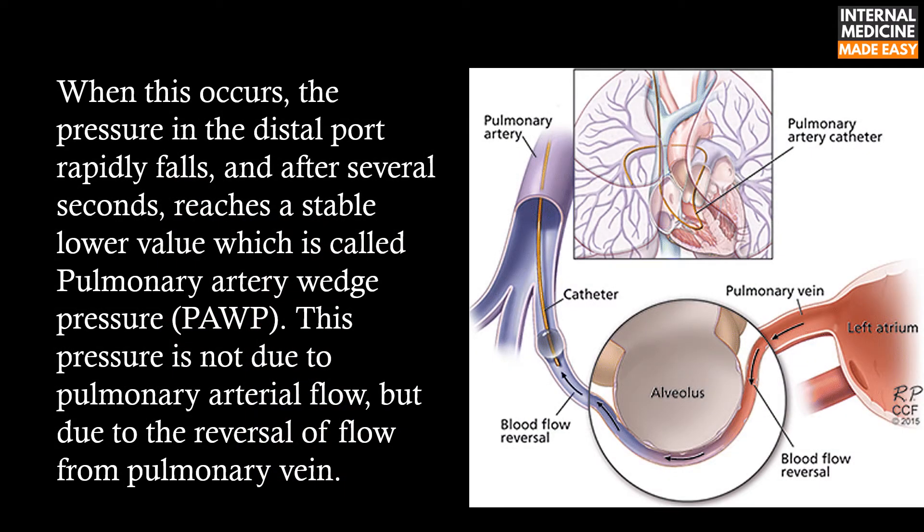When this occurs, the pressure in the distal port rapidly falls and after several seconds reaches a stable lower value, which is called pulmonary artery wedge pressure. This pressure is not due to pulmonary arterial flow but due to the reversal of flow from the pulmonary vein.